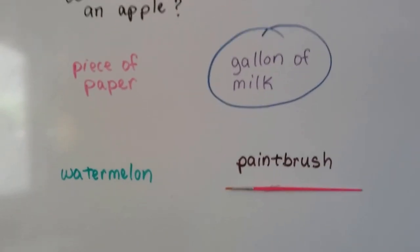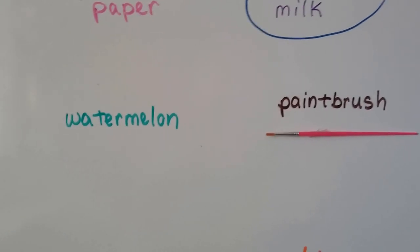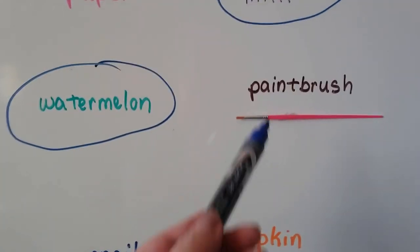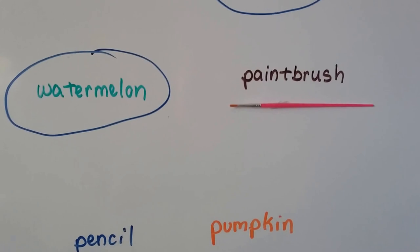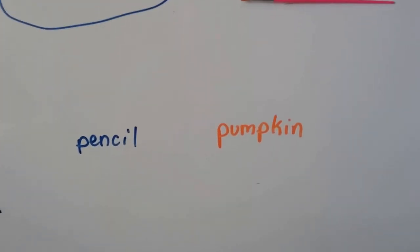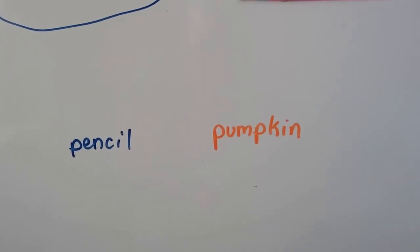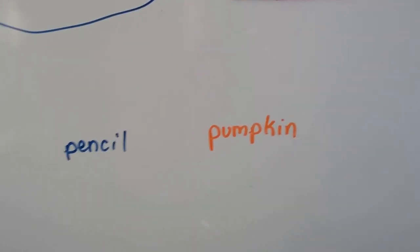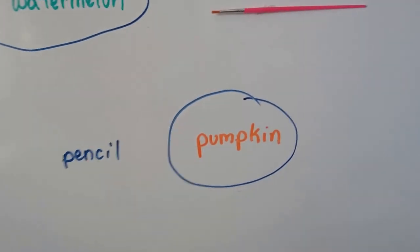What about a watermelon? Is a watermelon heavier than an apple? Yeah, they come in all different sizes, but most watermelons are heavier than an apple. How about that paintbrush? Would that be heavier than an apple? No, that's a thin, light paintbrush. How about a pencil? No, I don't think a pencil would be heavier than an apple. How about a pumpkin? Pumpkins come in all different sizes, just like the watermelon, but the average pumpkin would be heavier than an apple.